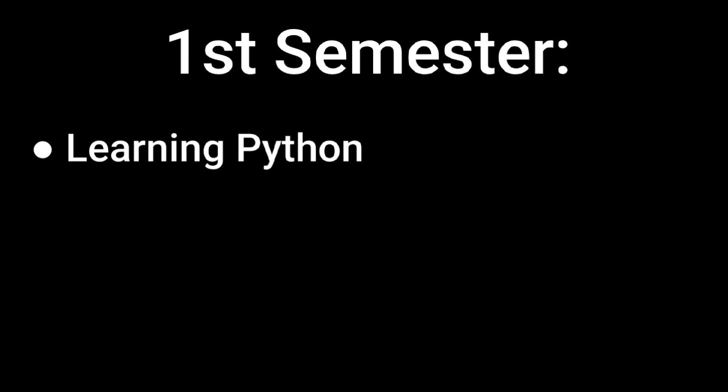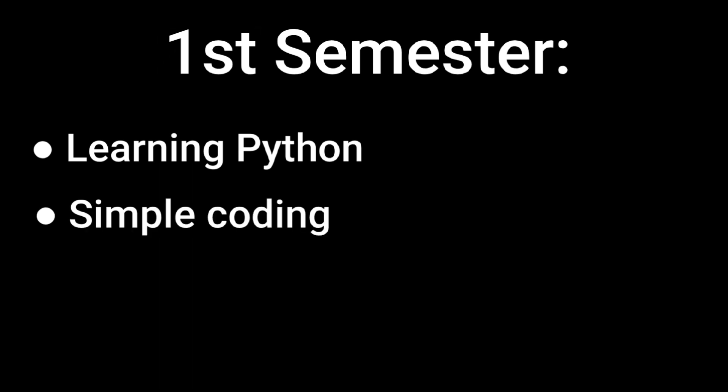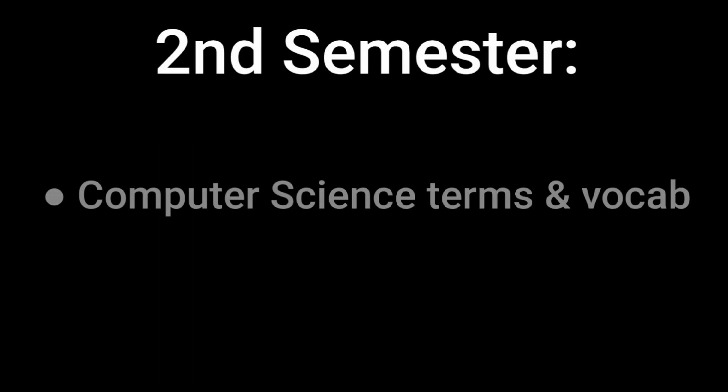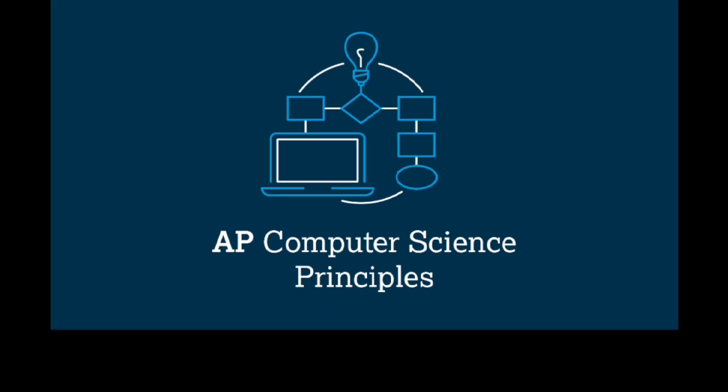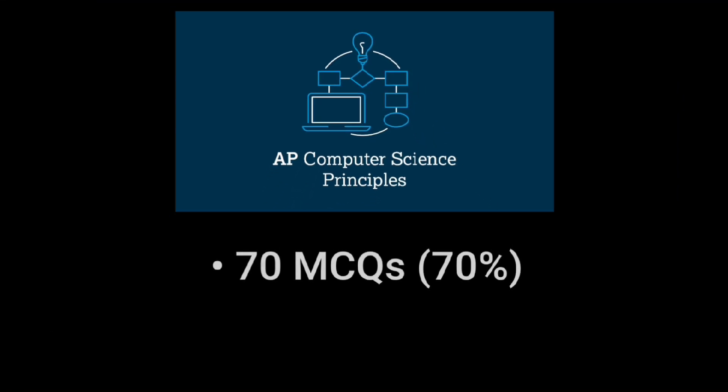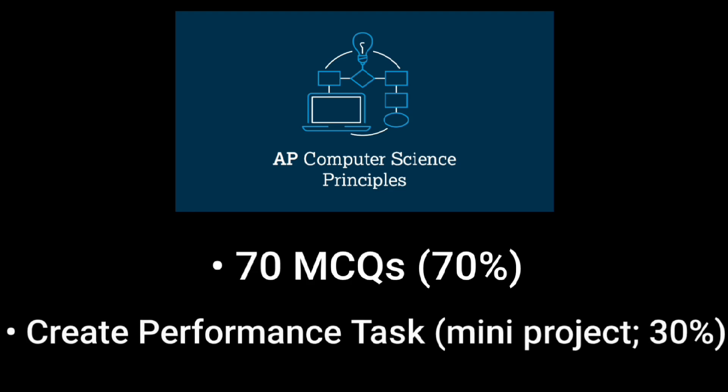So in the first semester, we focused on learning Python and simple coding. But in the second semester, we started going over a lot of computer science terms and vocab, because the AP exam consists of 70 multiple choice questions with these terms, and also a mini project where you can show off your coding skills in any coding language. The multiple choice exam is worth 70% of the total AP score.